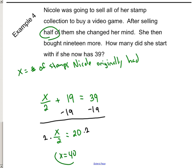So, basically, she had forty stamps to start with. If she had forty stamps and sold half of them, that'd leave her with twenty. And then if you add nineteen on top of twenty, that'd get you thirty-nine. So, that is correct. Nicole had forty stamps to start with.